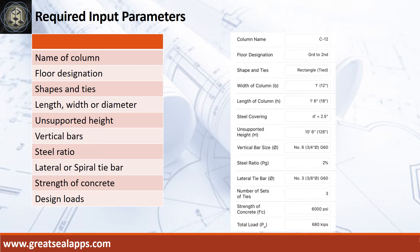Vertical bars, 3/4 inch diameter, grade 60. Steel ratio, 2%. Lateral tie bars, 3/8 inch diameter, grade 60. Strength of concrete, 6000 psi. And total load, 680 kips.